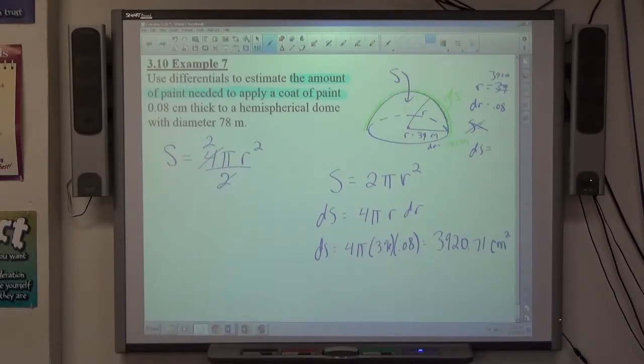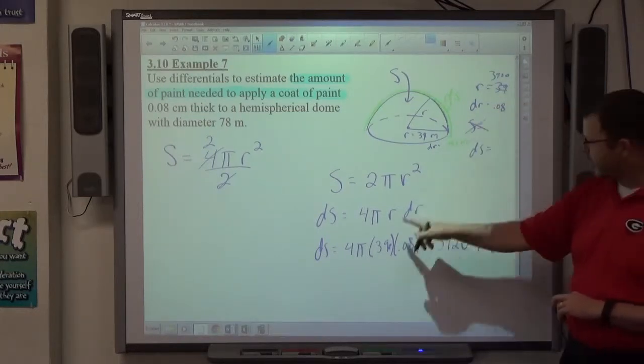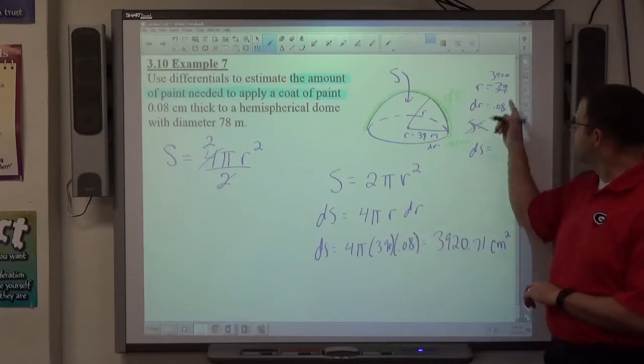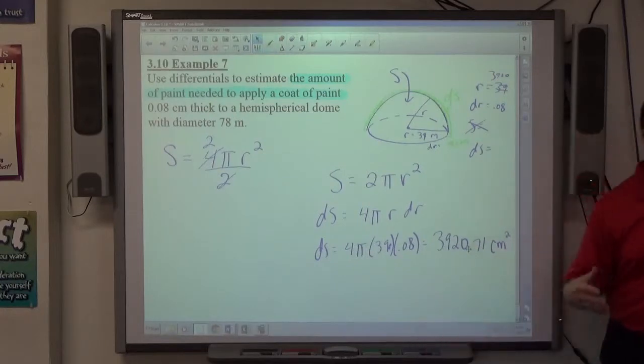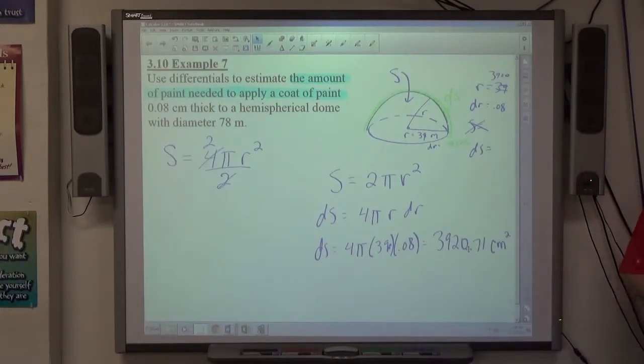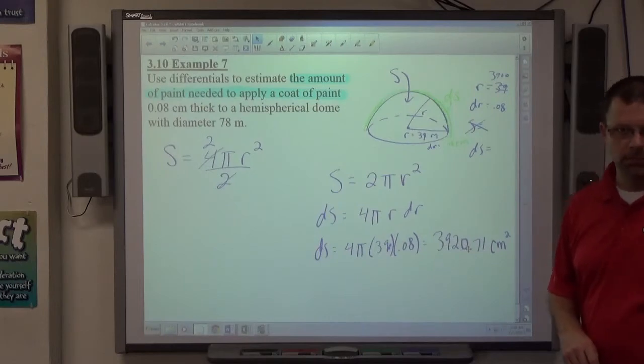Amount of paint needed. Seems like we should have, like, cubic centimeters of paint, shouldn't it? That's 3900 centimeters, that's .08. The change in surface area. Yeah, I suppose that's the area of paint we need. Okay, and paint usually covers a certain square footage, right? Or square, in this case, square centimeters. And depending on what unit you're in, you'd have to convert. So like if you wanted square feet, you'd have to figure that out. Like that. But that's how much paint we need. 3920.71 square centimeters of paint.